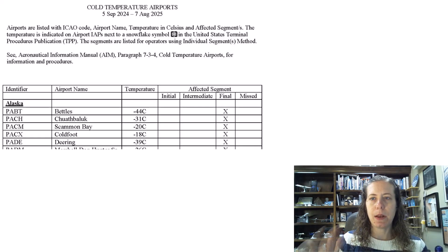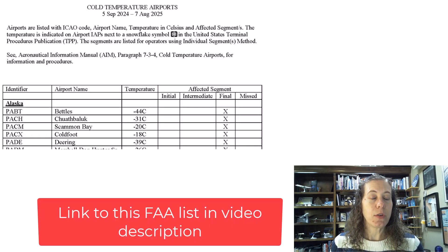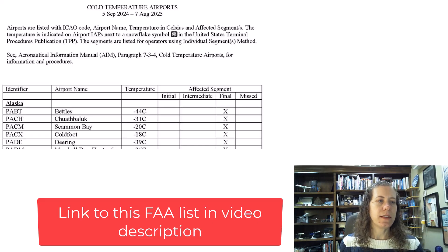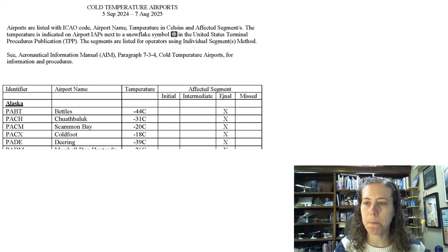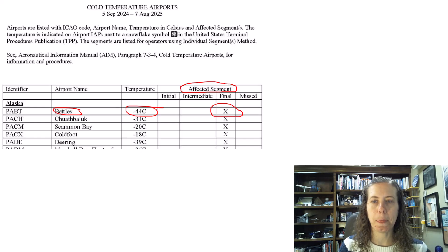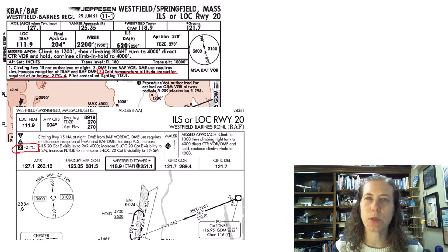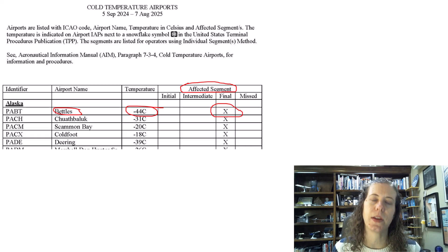The FAA publishes a list — they keep it up to date — of about 230 airports around the United States, with about 70 in Alaska and many in the lower 48. I'll link to it in the video description. On this list, the affected segment is listed for each airport. For example, if you're going into Bettles, Alaska, you would apply the correction at negative 44°C on the final approach segment. The actual approach charts do not say what segment you're supposed to apply the correction to, so check this list before flying into a cold-weather airport.